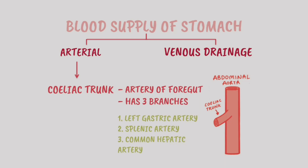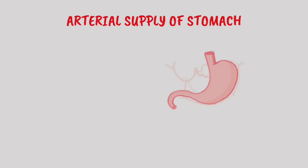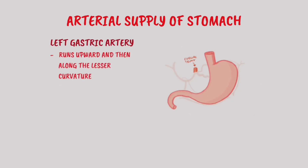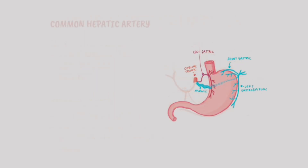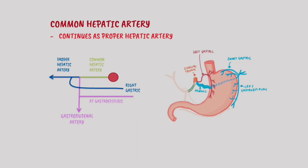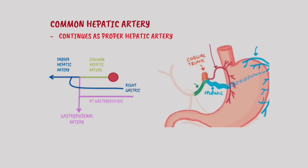Now let's understand the course of each of these arteries. The left gastric artery runs upwards to reach the cardiac end, where it turns and runs downwards along the lesser curvature. The splenic artery runs horizontally behind the stomach and divides into the short gastric artery, supplying the fundus, and the left gastroepiploic artery, which runs downwards and follows the greater curvature.